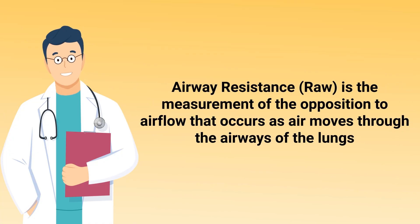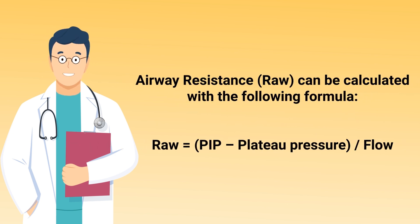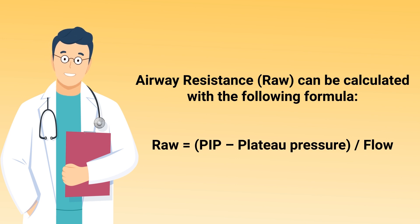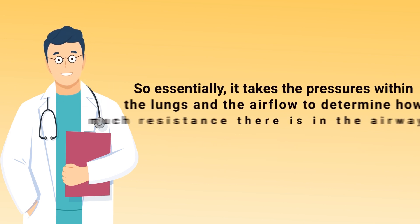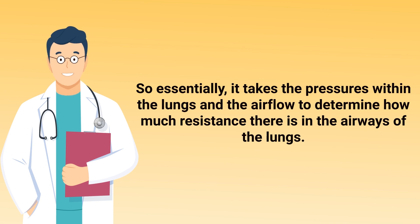Moving right along, what is airway resistance? Airway resistance is the measurement of the opposition to airflow that occurs as air moves through the airways of the lungs. Airway resistance can be calculated with the following formula: peak inspiratory pressure minus plateau pressure, divided by the flow. Essentially, it takes the pressures within the lungs and the airflow to determine how much resistance there is in the airways.